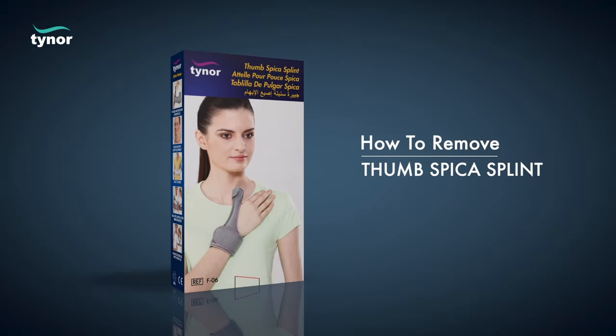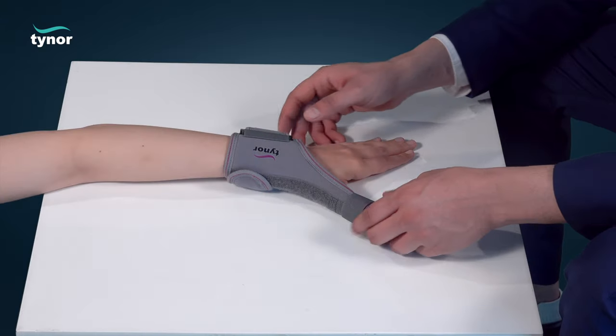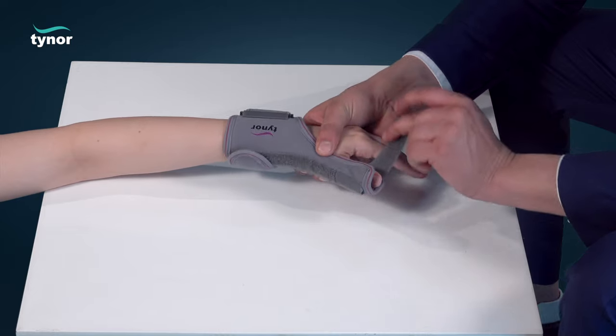Now let us see how to remove the thumb spica splint. Unfasten the fasteners to easily remove.